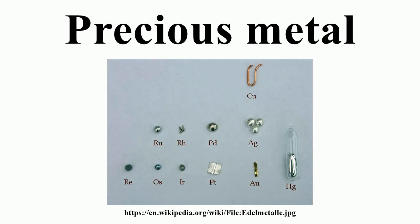Precious metals in bulk form are known as bullion and are traded on commodity markets. Bullion metals may be cast into ingots or minted into coins. The defining attribute of bullion is that it is valued by its mass and purity rather than by a face value as money.